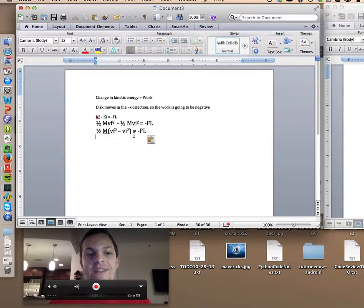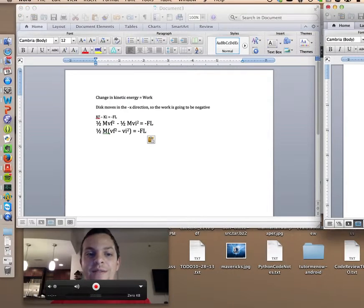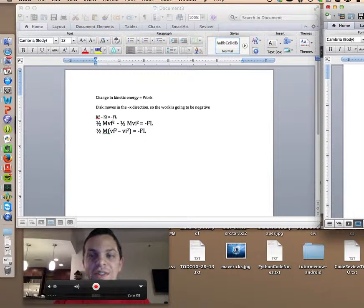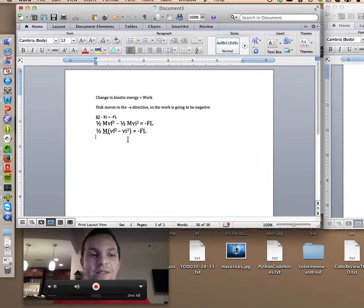Now after that, we can continue solving and working to find vf. So what we're going to need to do now is multiply by 2 on both sides. So then we're going to have m(vf² minus vi²) equals negative 2fl.